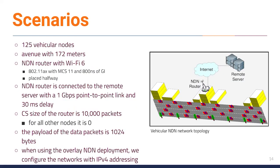Our simulation scenarios consist of 125 vehicular nodes that, along 172 meters of avenue, will be connected to an NDN hotspot through a Wi-Fi 6 network. The NDN hotspot has been placed halfway along the avenue. In addition, the NDN hotspot is connected to a remote server with a 1 Gbps point-to-point link and 30 milliseconds delay. The content store size of the NDN hotspot is 10,000 packets and for all other nodes it is zero. The payload of data packets is 1024 bytes. Finally, when using the overlay NDN deployment, we configure the networks with IPv4 addressing.